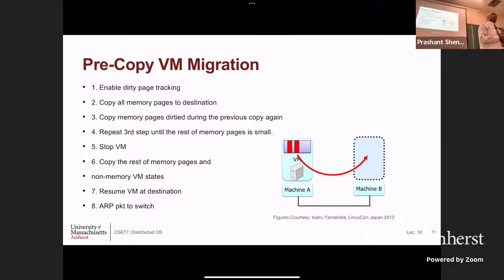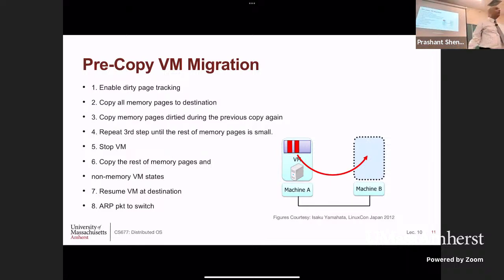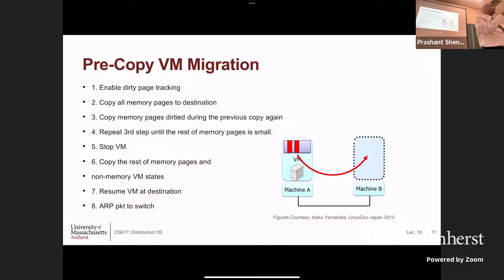The reason this terminates is the convergence property: as dirty pages shrink, each round takes less time, which means fewer pages change during that round. If your write rate is 10 pages per second average, a round taking 6 seconds will produce ~60 dirty pages, but the next round sending only those 60 pages takes much less time, so fewer pages dirty in that round. Eventually you hit a threshold where the dirty set is small enough to pause and finalize. In pre-copy, copying happens before the VM resumes on the destination; in post-copy, copying happens after VM execution starts.